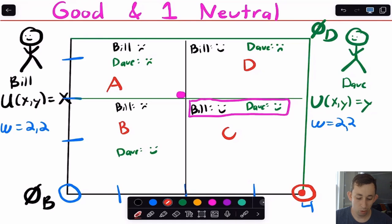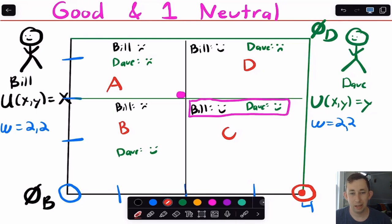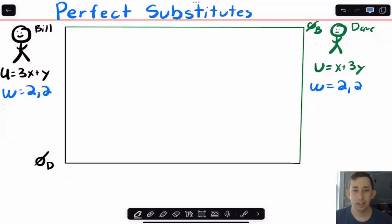So the Pareto optimal point is actually the corner where Bill has all the X's and Dave has all the Y's — because that's the point at which they're both happiest. Bill and Dave like different things, so at any other point you can always do better by giving Dave more Y's and giving Bill more X's. Because they're neutrals for the other person's good, taking away Y from Bill or X from Dave doesn't impact utility. That is the Pareto optimal point for one good and one neutral.